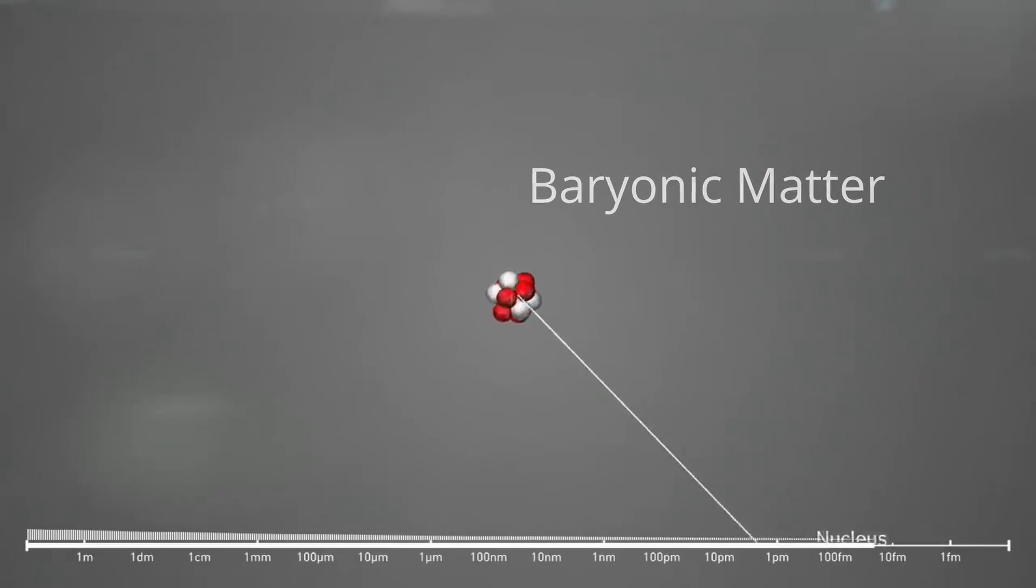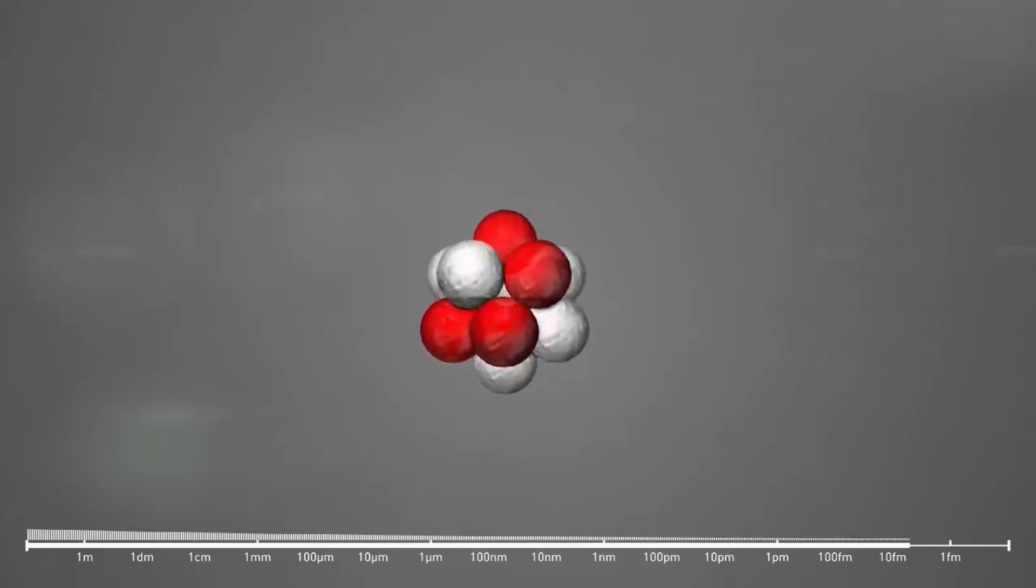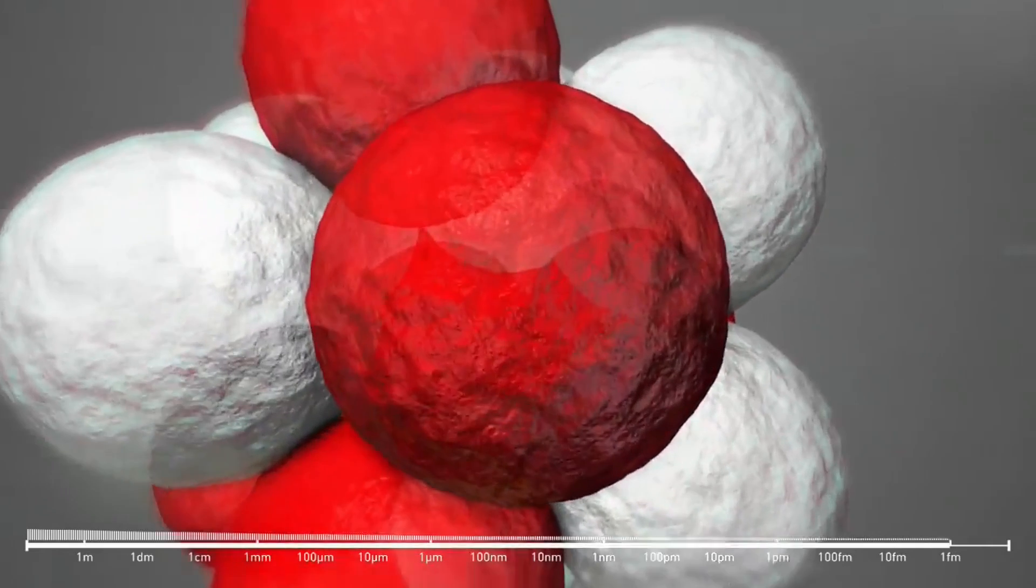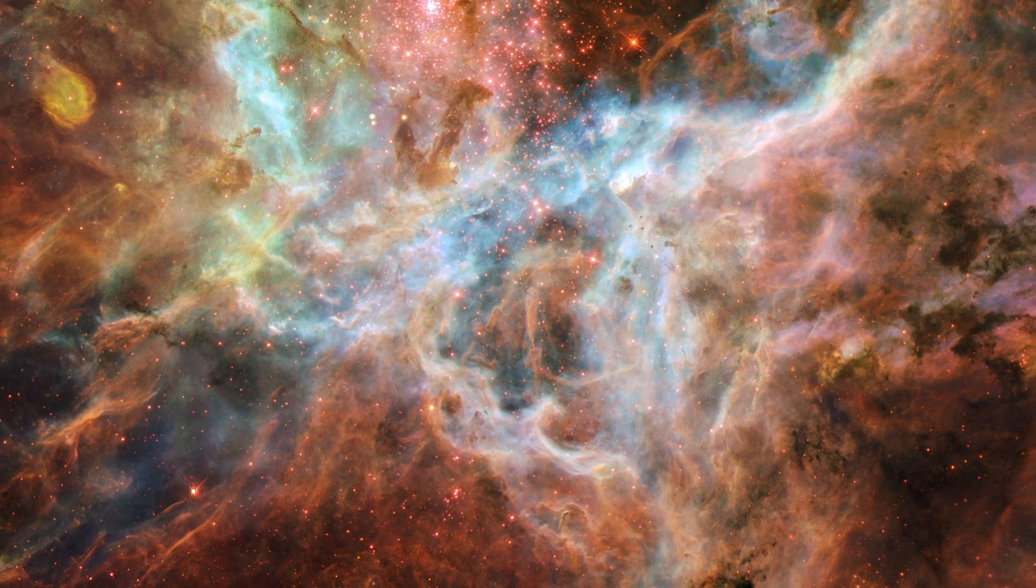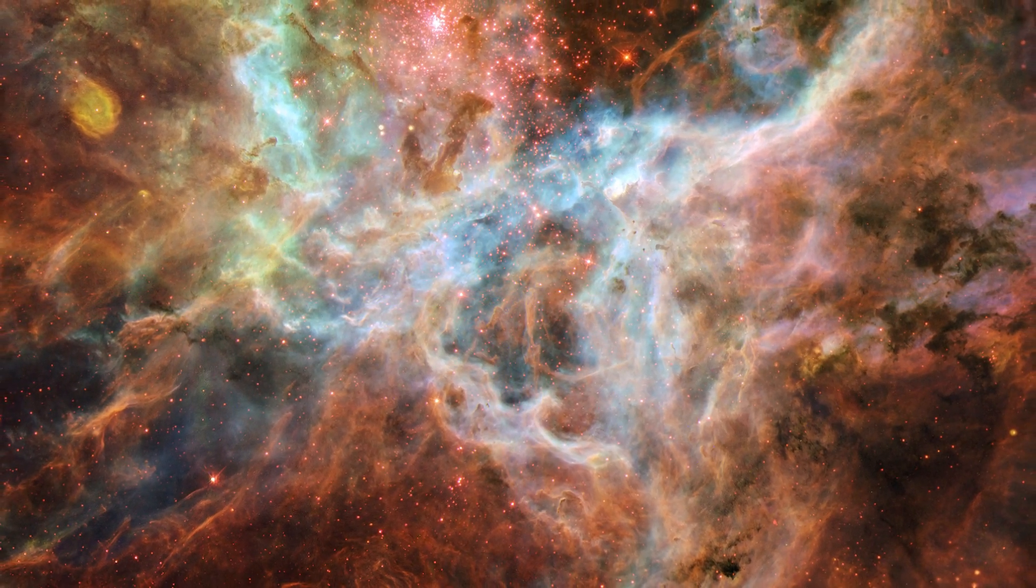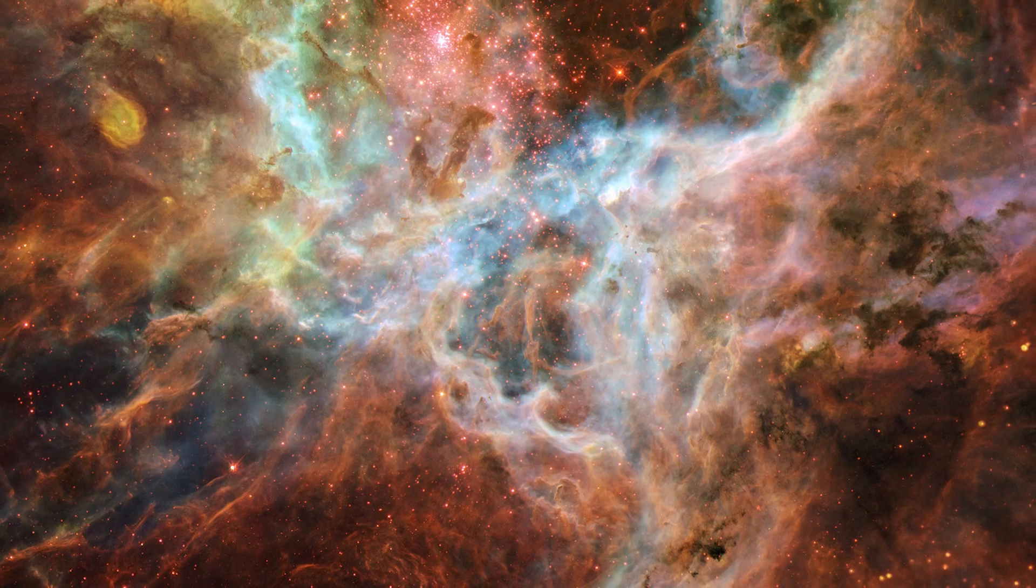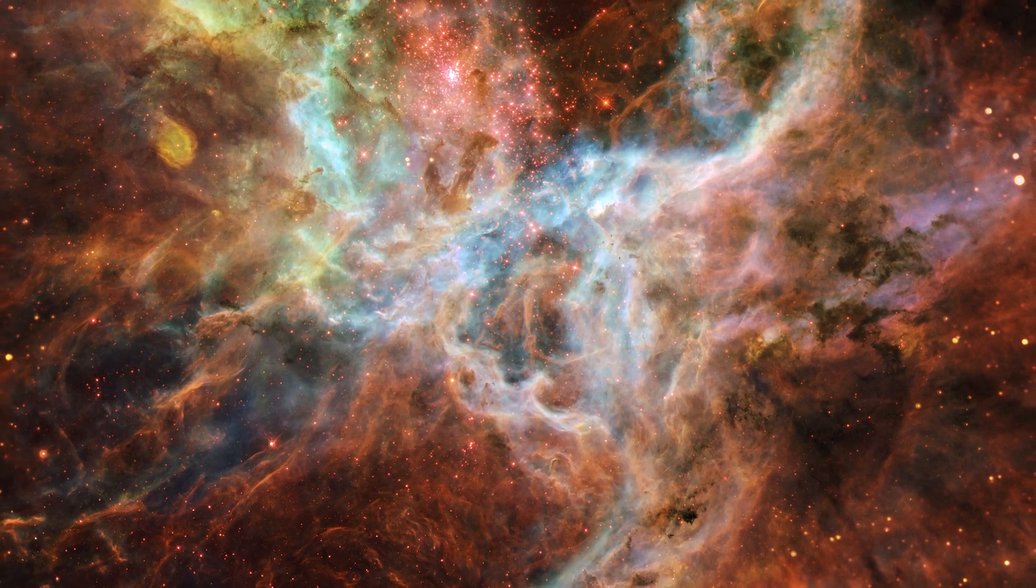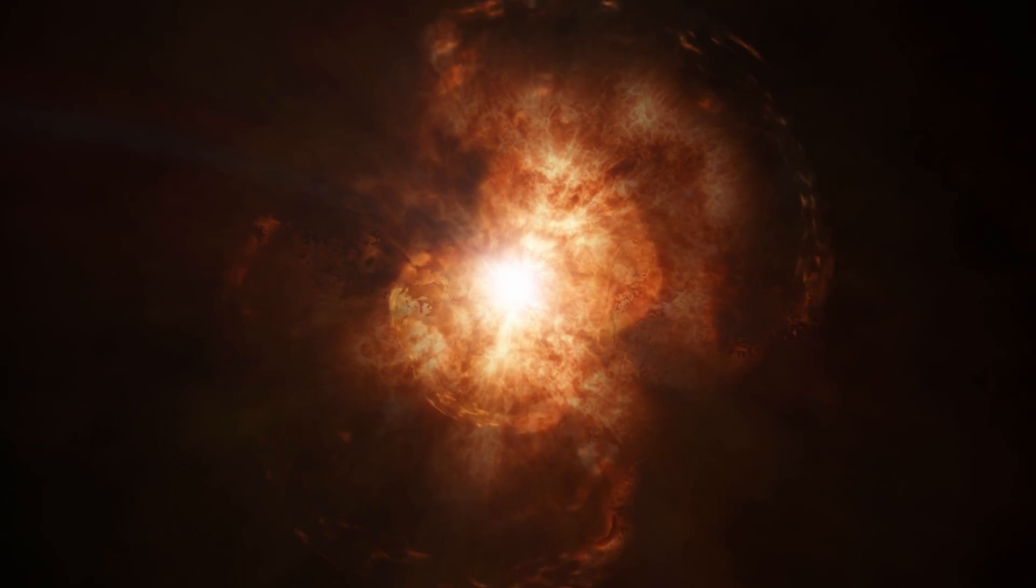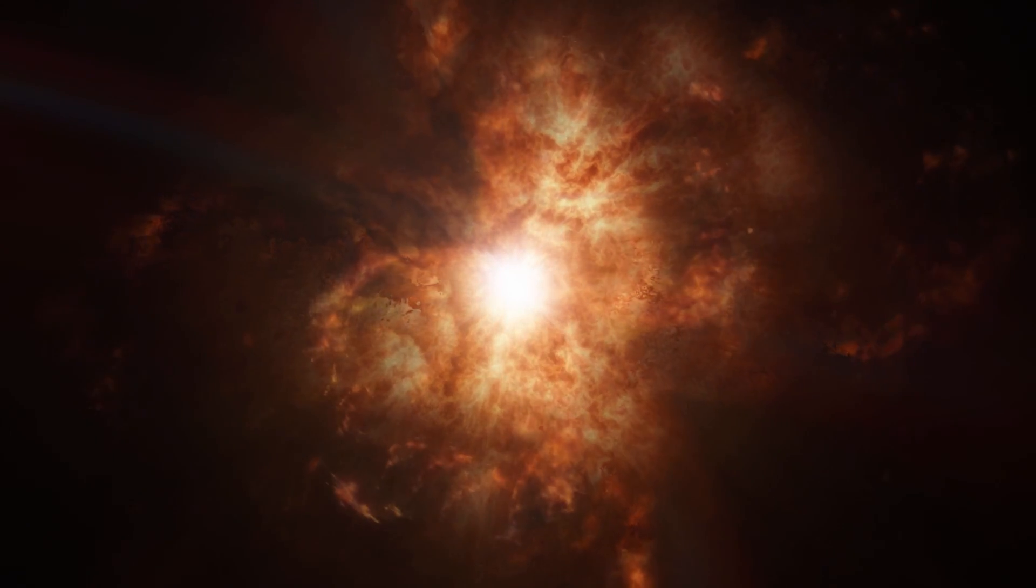Baryonic matter is stuff made up of protons and neutrons and all the typical atoms we see across the universe. This would include all the visible stars and even the weird and wonderful stuff like black holes, neutron stars and white or brown dwarfs. This type of matter all interacts with light in a way that doesn't quite fit what we know about dark matter already. So whatever dark matter is, it's unlikely to be baryonic in nature.